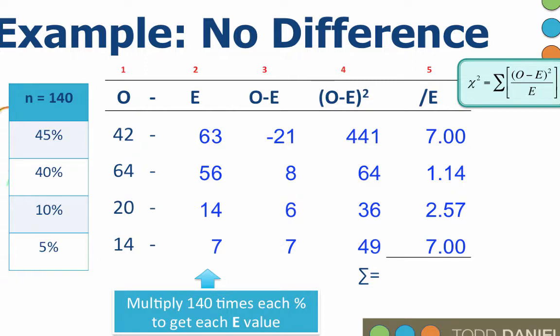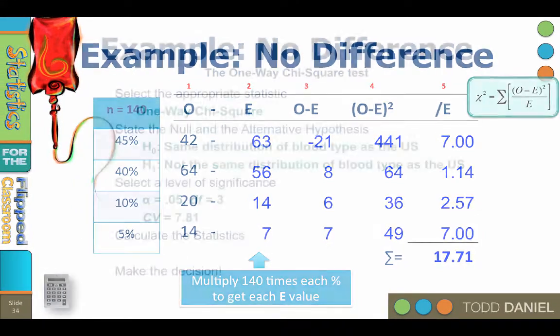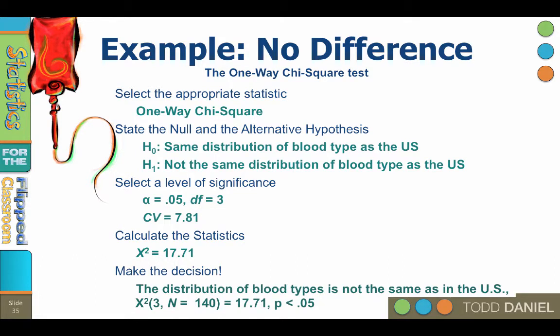Those values add up to 17.71. So going back to our five steps of hypothesis testing: step four, calculate the statistics — the total chi-square value was 17.71. Step five, make the decision. Compare the obtained chi-square value of 17.71 to the critical value of 7.81. Since the chi-square value exceeds, or is further from zero than, the critical value, the results are statistically significant. The distribution of blood types is not the same as in the United States. Chi-square, with three degrees of freedom, N of 140, equals 17.71, p less than 0.05.